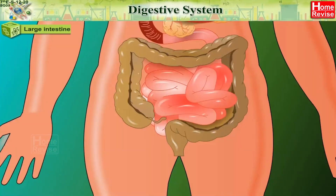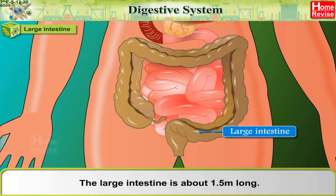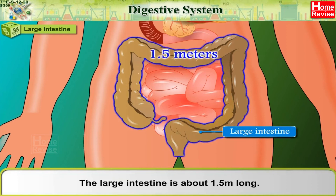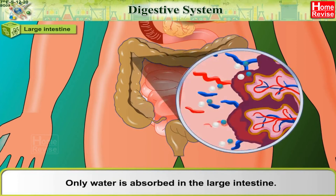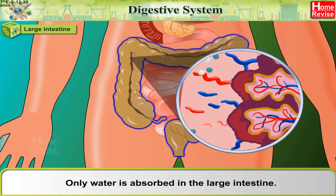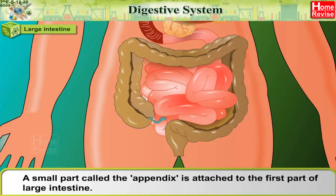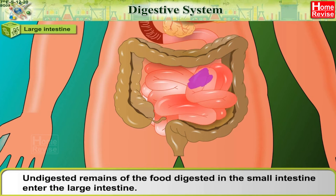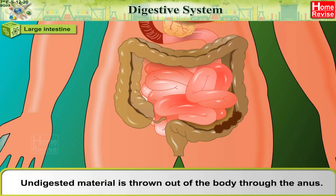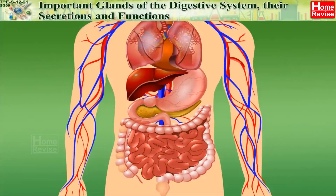Large intestine: The large intestine is about 1.5 meters long; only water is absorbed here. A small part called the appendix is attached to the first part of the large intestine. Undigested remains from the small intestine enter the large intestine, and undigested material is excreted from the body through the anus.